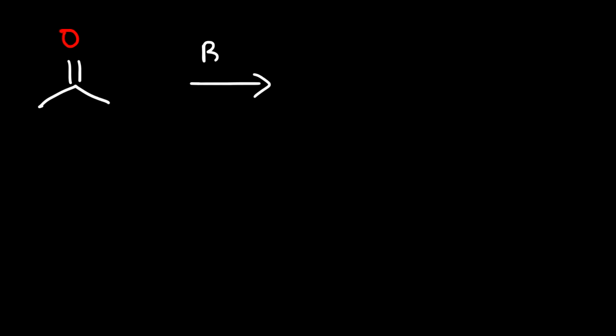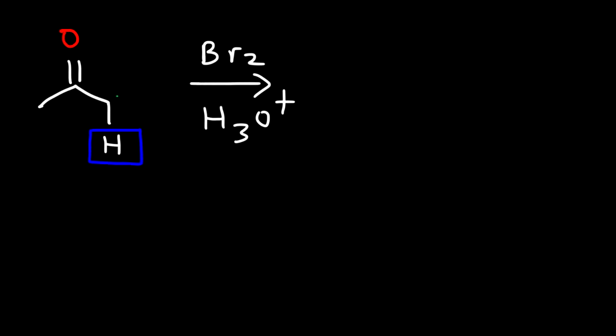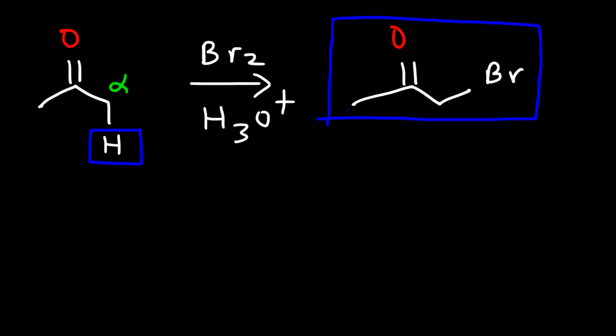In this video we're going to go over the alpha halogenation reaction of ketones. Let's start with acetone and react it with bromine under acidic conditions. To draw the major product, all we need to do is replace the alpha hydrogen atom with a bromine. The alpha hydrogen is on the carbon one carbon away from the carbonyl group. Under acidic conditions, only one of the alpha hydrogen atoms gets replaced, and so this is our product.